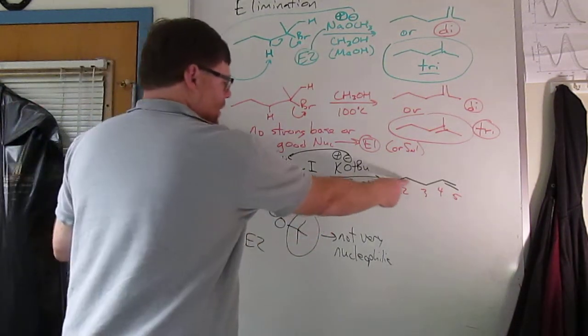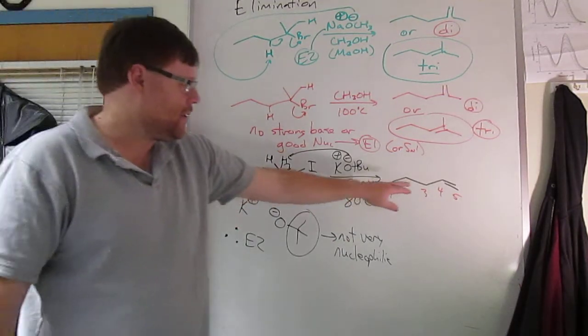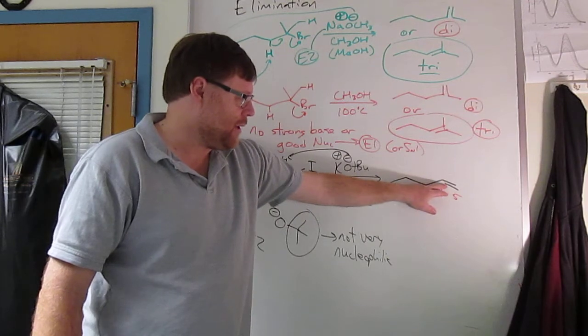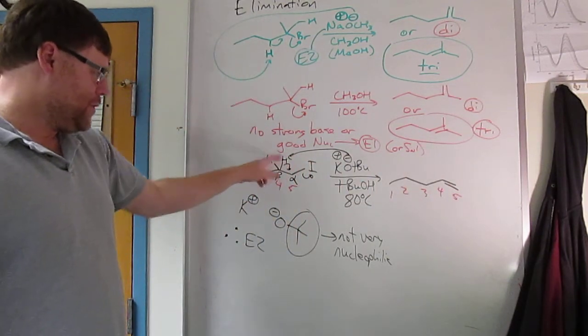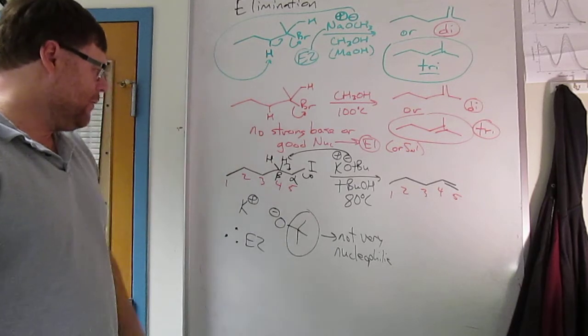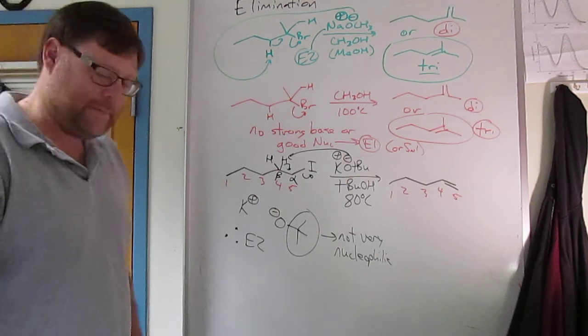So that's going to be our elimination product. There's only in fact one elimination product possible. This is not an isomerizable double bond, two hydrogens on the terminal carbon. So there's only one pair of beta hydrogens. That's the only alkene we can get. All right.